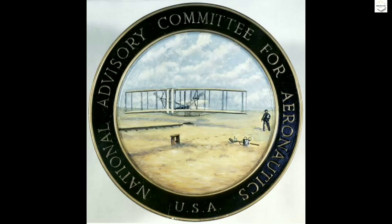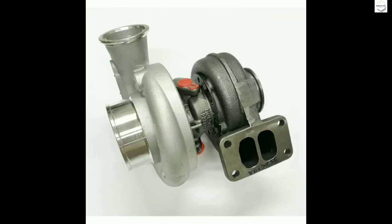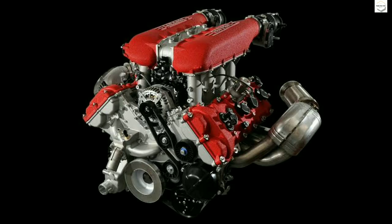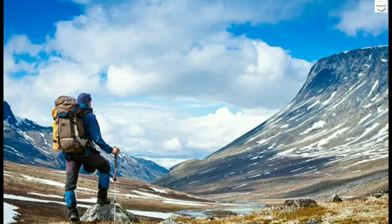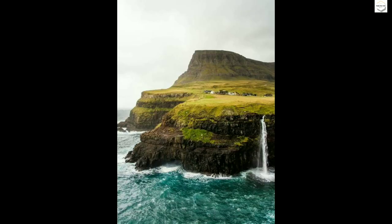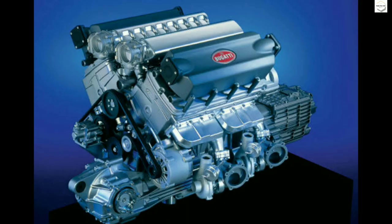In 1917, America's National Advisory Committee for Aeronautics, along with Sanford Alexander Moss, used the turbocharger. With the turbocharger in use, the diesel engine could perform the same way at high altitude as at sea level, maintaining consistent power output.